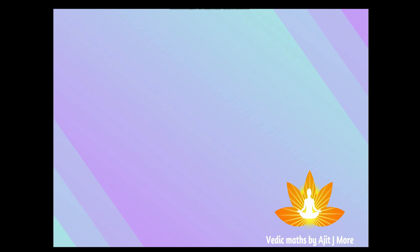Before telling you the Vedic math trick, let's discuss the conventional method — multiplying 65 with 65. First multiply 5 with 5, you get 25; put 5 here and carry 2. Then multiply 5 with 6, that is 30, plus carry 2 becomes 32, so write 3, 2, 5.